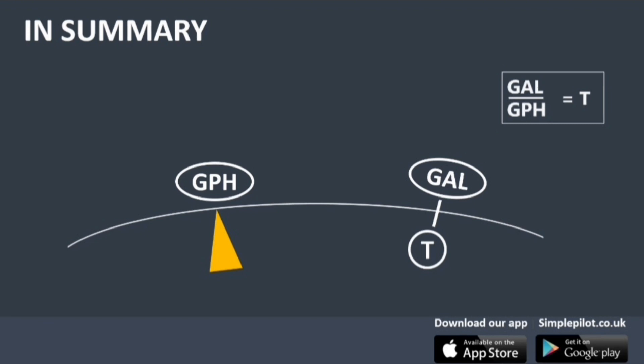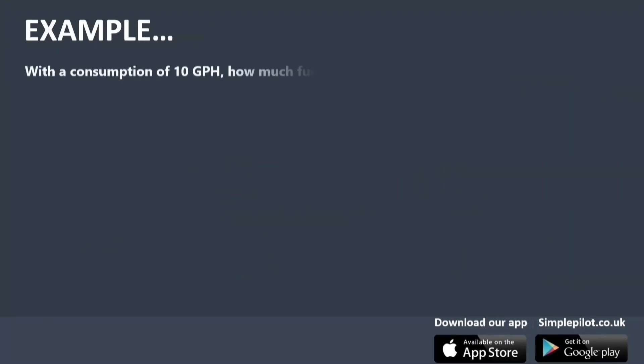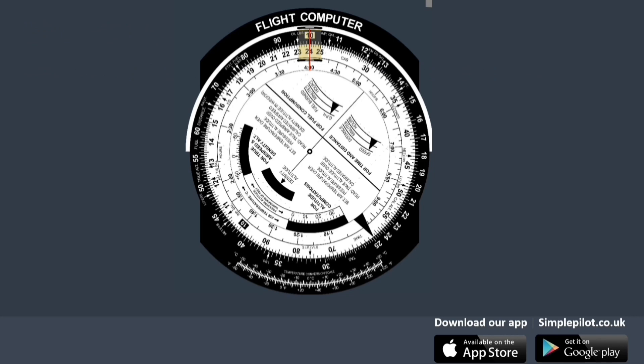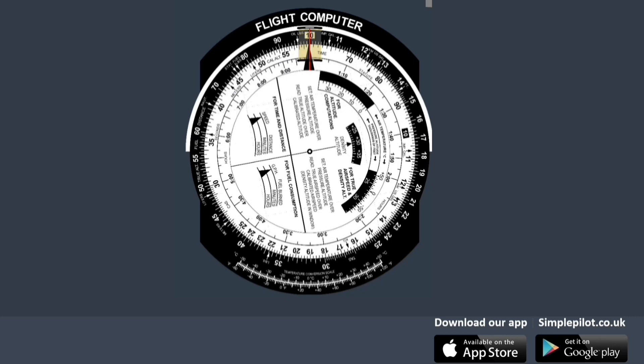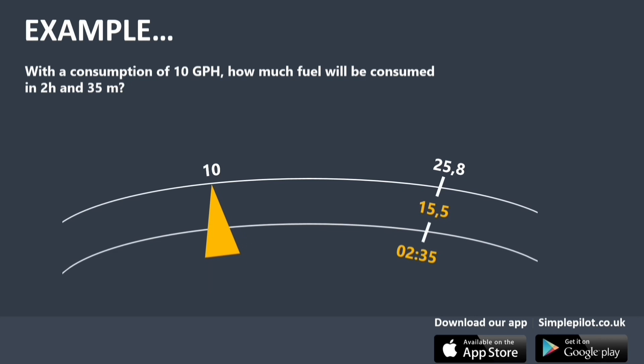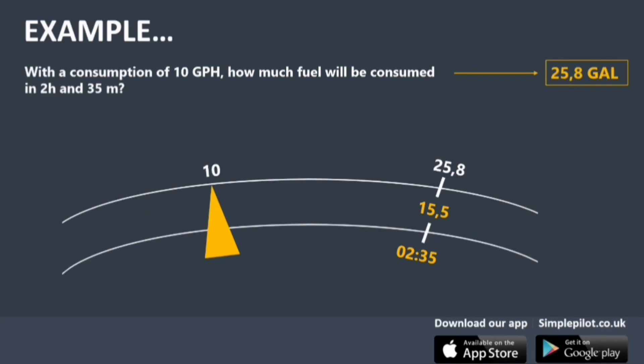Let's see an example. With a consumption of 10 gallons per hour, how much fuel will be consumed in 2 hours and 35 minutes? We align the speed index with the current fuel consumption of 10 on the outer scale. Then we look for the time — 155 minutes on the middle scale, represented by 15.5 — or we can look for 2 hours and 35 minutes on the inner scale. Finally, we read the corresponding fuel consumed on the outer scale, which is 25.8 gallons.